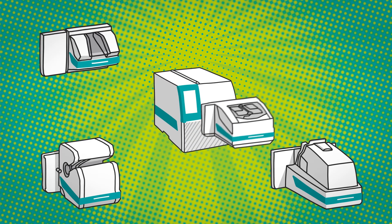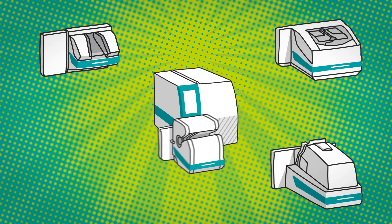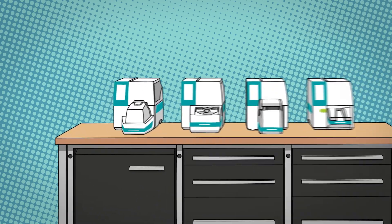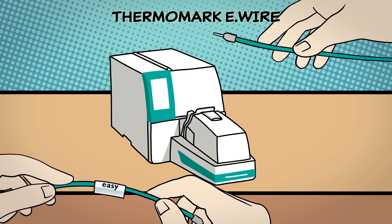This enables the efficient implementation of automated identification solutions for wires, cables, and terminal strips. The Thermomark E-Wire can be used to mark radially and axially movable and captive cable markers.